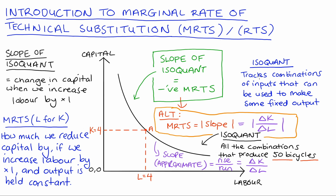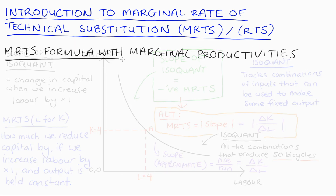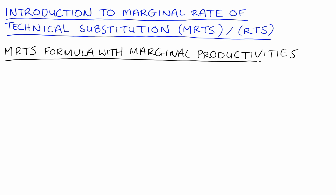That calculation is only an approximation because we have a curved isoquant, so the slope and MRTS are constantly changing as we move along the curve. To get a more precise measure we can use derivatives, which brings us to the MRTS formula in terms of the marginal products of capital and labour — the version we see most commonly.